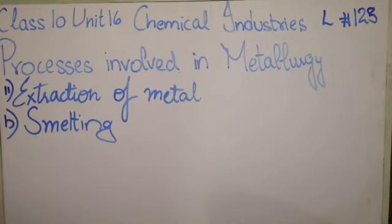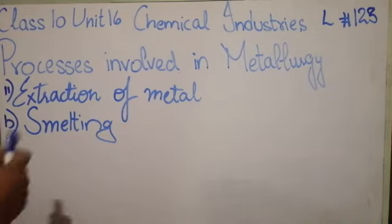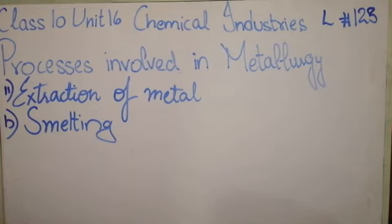In this process, first of all, ferrous sulfide — as I explained in the previous video, copper pyrite breaks down into cuprous sulfide and ferrous sulfide. The ferrous sulfide is oxidized to form ferrous oxide, and it will react with sand. Because we have sand, flux, and coke, it reacts with sand to form iron silicate slag. Because the iron silicate slag is lighter, it rises to the top and is removed from the upper hole.